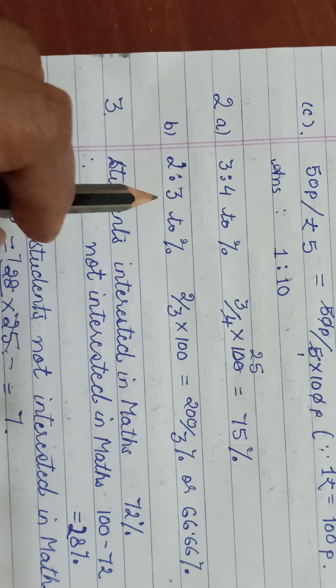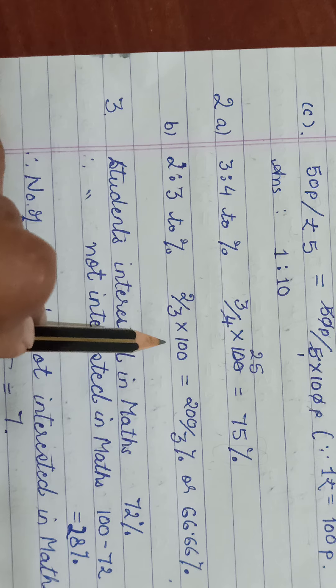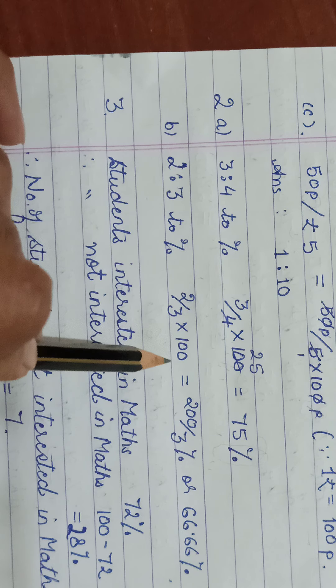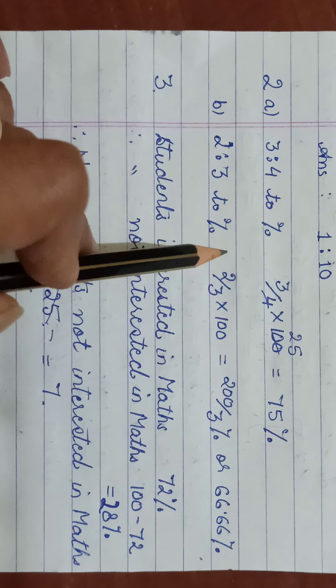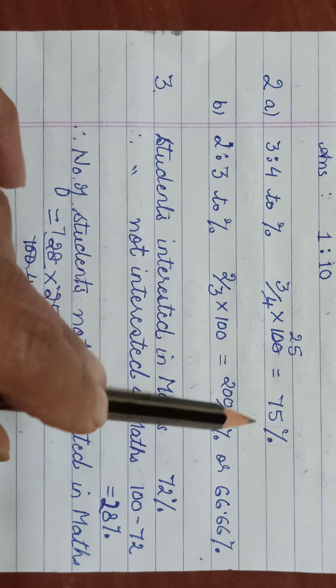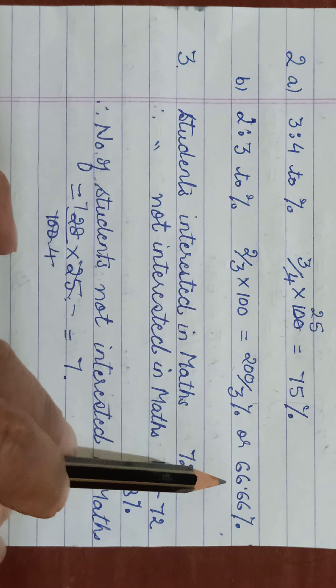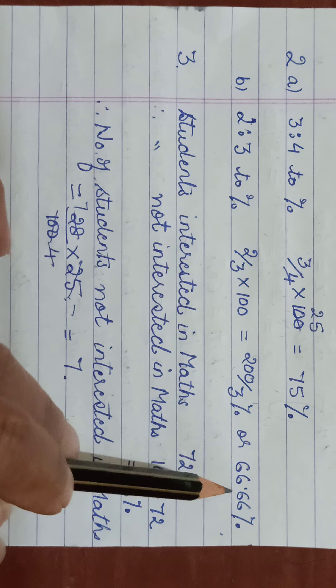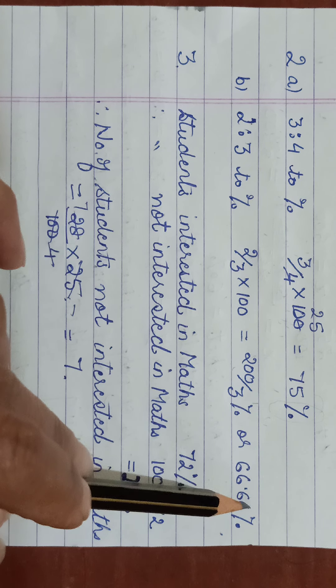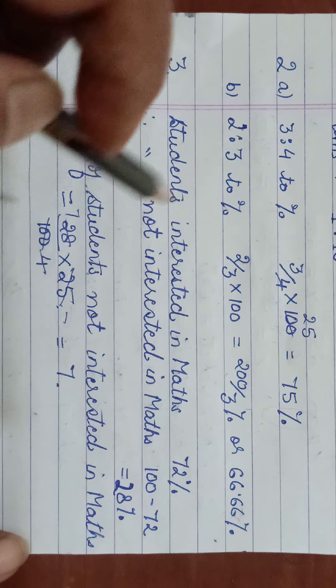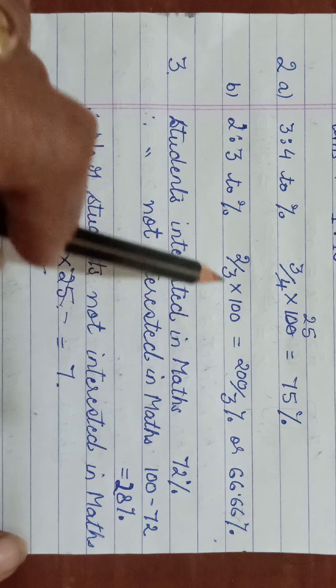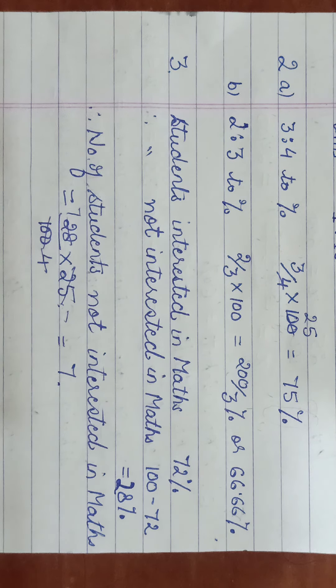Next ratio was 2 is to 3. So 2 upon 3 into 100 again. That becomes 200 upon 3 percent. Fraction and you can divide and convert to decimal. So 66.66 or round off, it will be 66.7. We have given the answer to two decimal places. That was it.